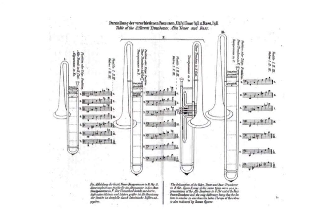However, in the early 19th century, the nominal trio of alto, tenor, and bass trombone was in fact usually played on what we would call straight tenor trombones in B-flat. The three differed only in the size of the mouthpiece.